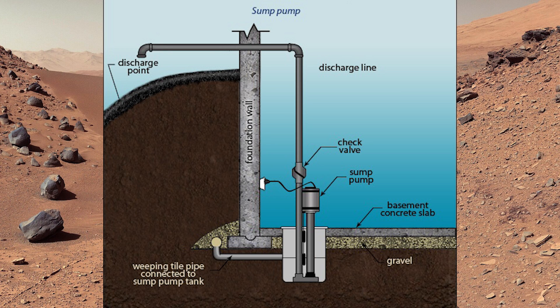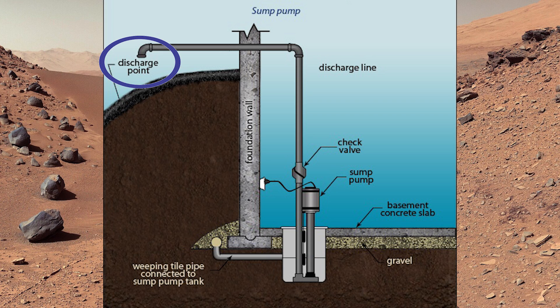Now let's talk about sumps. Here's a picture of a sump installed in someone's basement. The weeping tile is connected to the sump pit so any rain that comes down beside the building can flow into the sump pit and then be pumped out by the sump pump. Right now it's just discharging on the ground, which is perfectly acceptable in many areas. But for today's example, we want to turn that discharge pipe around and pipe it straight into the storm building drain.